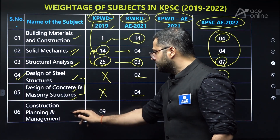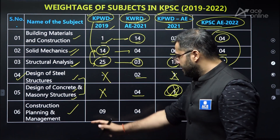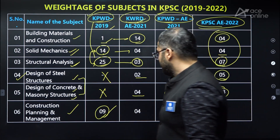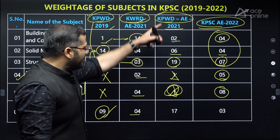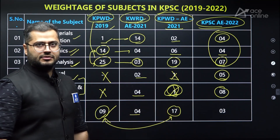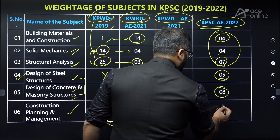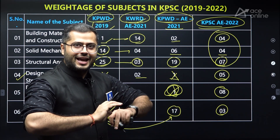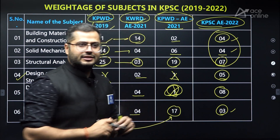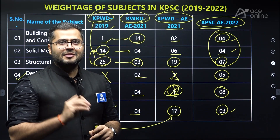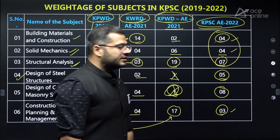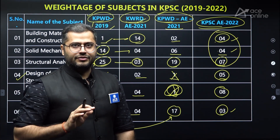Now comes construction planning and management — a very, very important subject, as you can see in the weightage. In KPWD 2019, nine questions were asked; in KWRD, four questions; in KPWD 2021, 17 questions — very good weightage. KPSCA had only three questions. Don't ignore every subject with less weightage. For example, in KPSCA, those three subjects with less weightage add up to a quite good number: 4 plus 4 plus 3. So yes, you can leave one or two subjects, but not all.